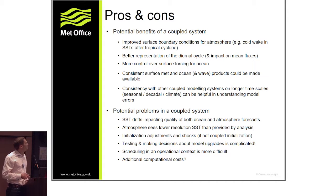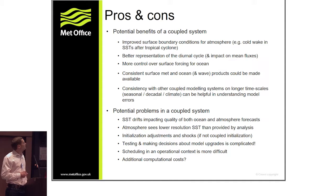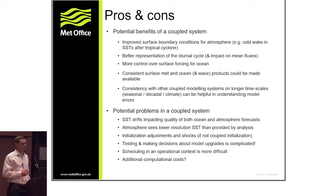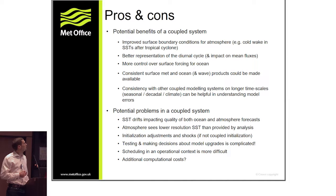The key benefit of a coupled system, at least from the atmospheric perspective, is that it can see an evolving sea surface temperature. There are particular cases where there's good evidence this can impact atmospheric modeling: tropical cyclones are a key example, and both individual case studies and composites have shown benefit. You can also better represent the diurnal cycle, which impacts mean fluxes between atmosphere and ocean.